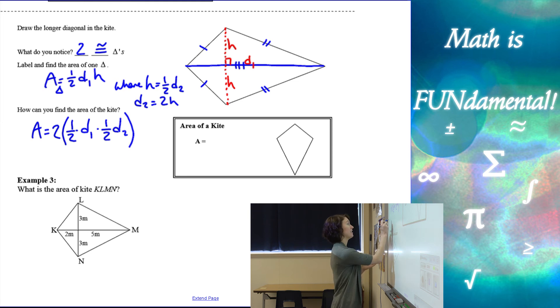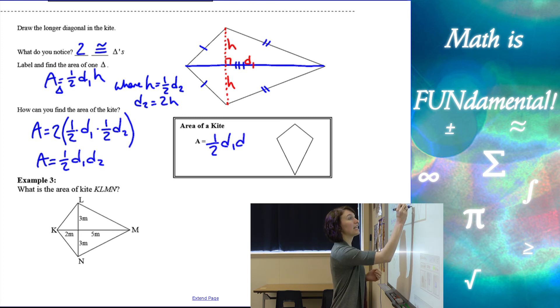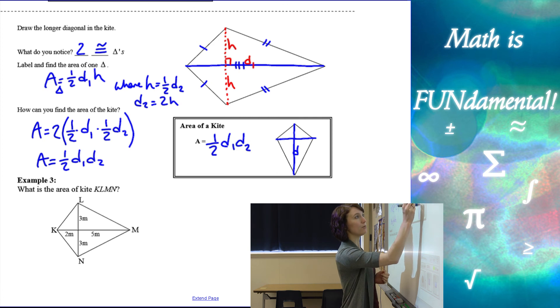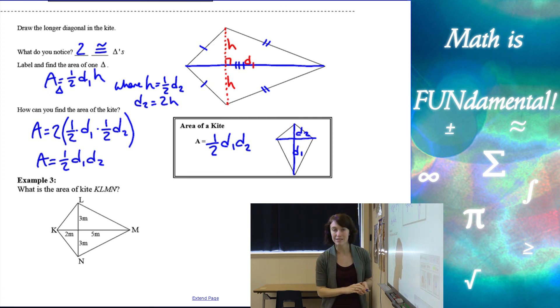All right, now if we simplify this, I end up with two times one half cancels out. And then I have one half D1 times D2. So if you notice, this is the same formula as the rhombus. So they just happen to be the same.